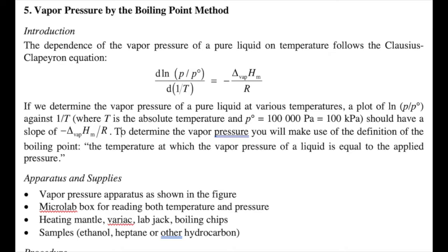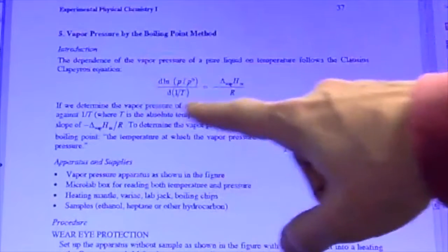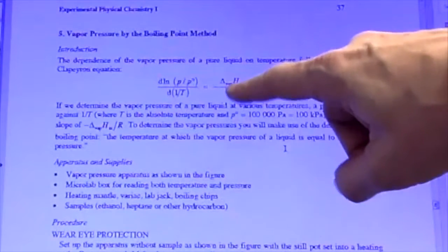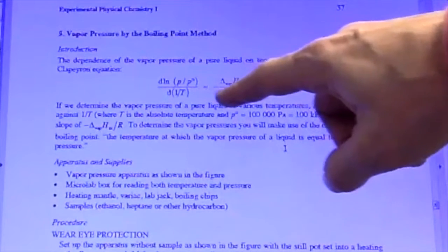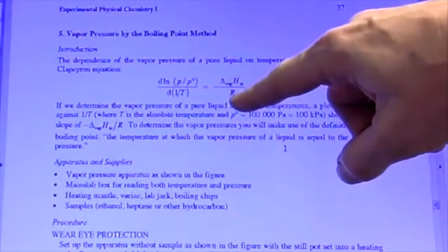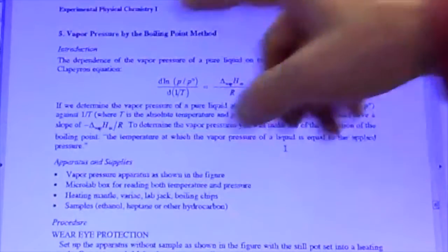Divided by the standard state pressure, 100 kilopascals, versus 1 over T—the slope of that should be ΔH over R, or minus ΔH over R. So if we take the slope times minus R, we should get ΔH of vaporization for this system.